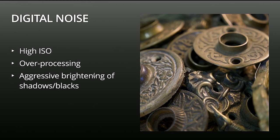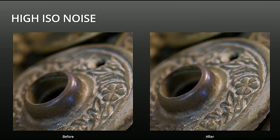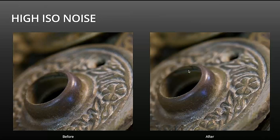With digital noise, the most common cause is cranking the ISO in a low light situation, trying to freeze motion or have a shutter speed fast enough to handhold. The other culprit is what we can call over-processing or aggressive brightening of shadows and blacks — that's where a lot of digital noise hides. Here's an example of some high ISO noise. This was shot at ISO 3200, and you can see visible grain in the upper left corner. I ran this through DXO Pure Raw 3 and it cleaned that right up. The cool thing about AI is it does a much better job than non-AI tools of preserving detail. In the past, lower quality noise reduction tools would clear out grain but you also lost a tremendous amount of detail. These AI tools preserve fine detail while getting rid of the grain.